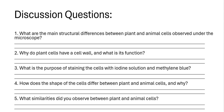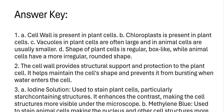Now let's proceed to the discussion questions. What are the main structural differences between plant and animal cells observed under the microscope? Chloroplasts are present in plant cells; vacuoles in plant cells are often large while in animal cells they are usually smaller. The shape of the plant cell is regular and box-like, while animal cells have a more irregular, rounded shape.